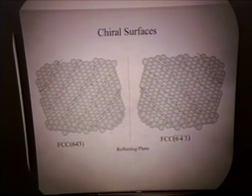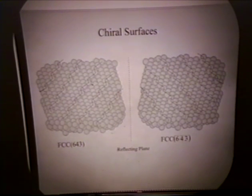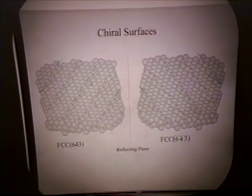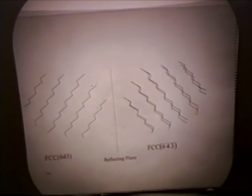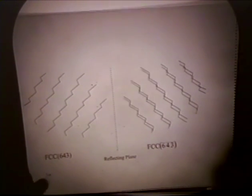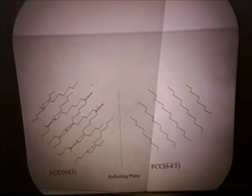I'm going to perform a demonstration to try to convince you that these two surfaces cannot be superimposed. Imagine I remove all the atoms and just leave the step-kink structure there, then take this structure and try to superimpose it on the other side. As you can see, any kind of rotation transformation I attempt still won't allow me to superimpose the two surfaces. By definition, this means that these surfaces are chiral. In actuality, it's been proven that any step structure with kinks is indeed chiral.